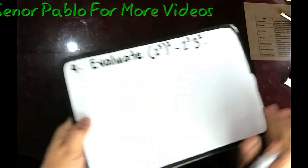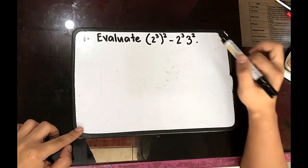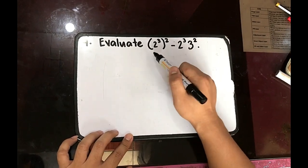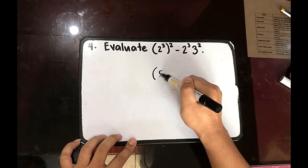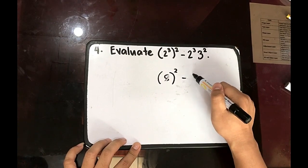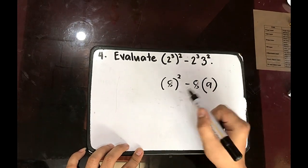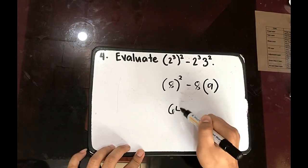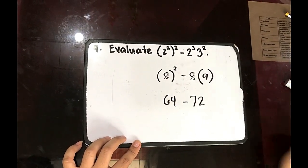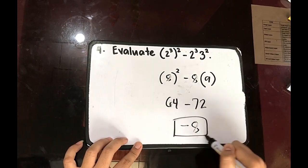Number 4. Evaluate quantity 2 cubed raised to 2 minus 2 cubed times 3 squared. So let us solve. 2 cubed is 8. That is 2 times 2 times 2, squared minus 2 cubed is 8 times 3 squared, 9. 8 squared is 64 minus 8 times 9, 72. 64 minus 72, negative 8. Final answer.